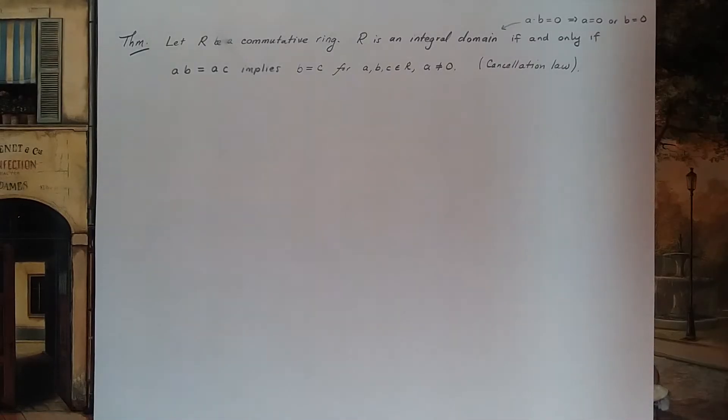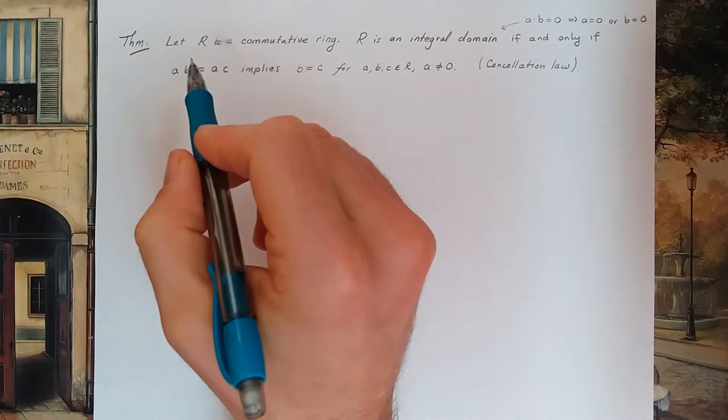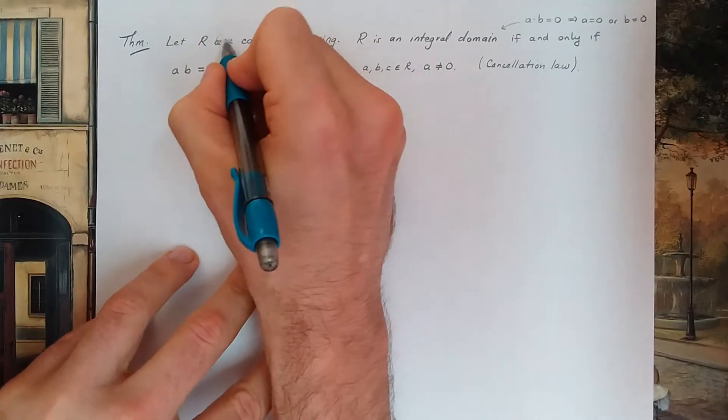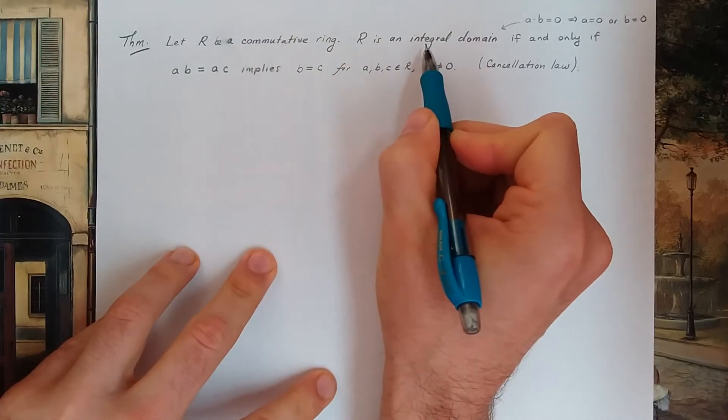Alright, in this video we'll give a relationship between integral domains and fields. It starts with this theorem. So let R be a commutative ring. Multiplication is a commutative operation.